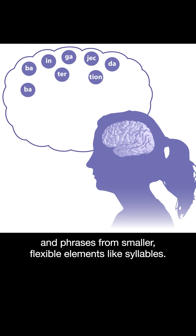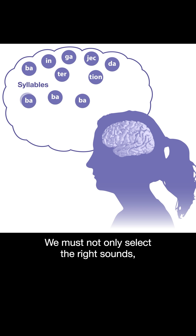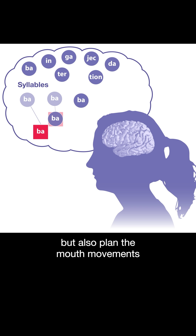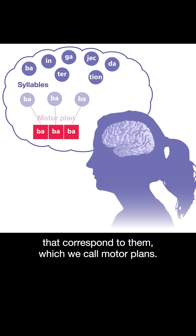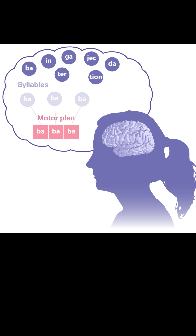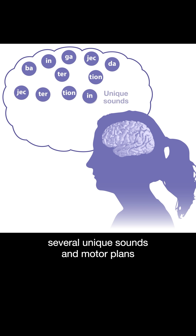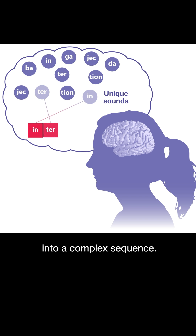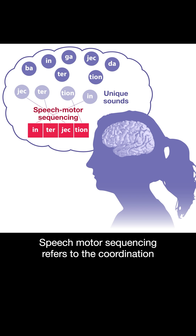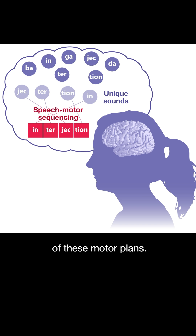When we speak, we build words and phrases from smaller flexible elements like syllables. We must not only select the right sounds, but also plan the mouth movements that correspond to them, which we call motor plans. Oftentimes, to say a word we must pull together several unique sounds and motor plans into a complex sequence. Speech motor sequencing refers to the coordination of these motor plans.